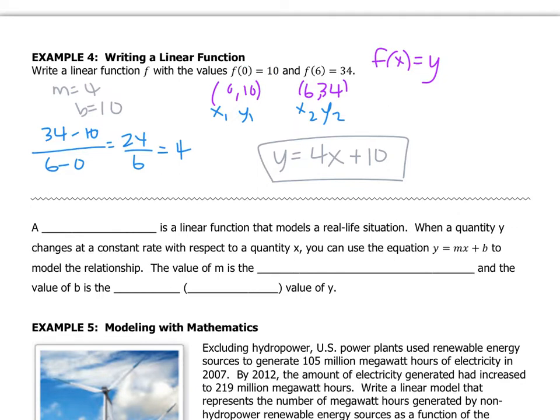A lot of times you can use y equals mx plus b linear relationships to model some things in real life. So what we do is we call those linear models. When you have that situation, the value of the slope is the constant change. And the value of b is the initial or starting value. So instead of saying slope and intercept, we talk about what is the change and what is the starting value.